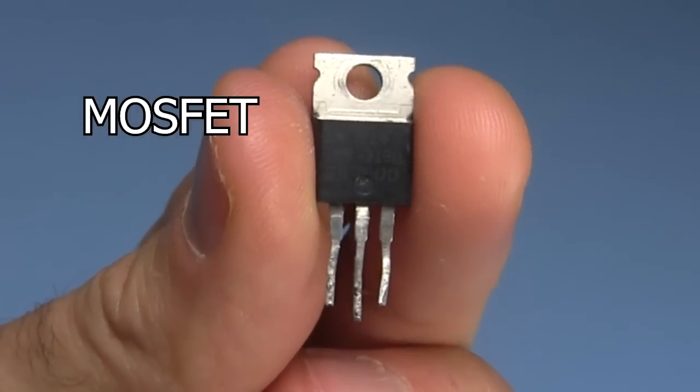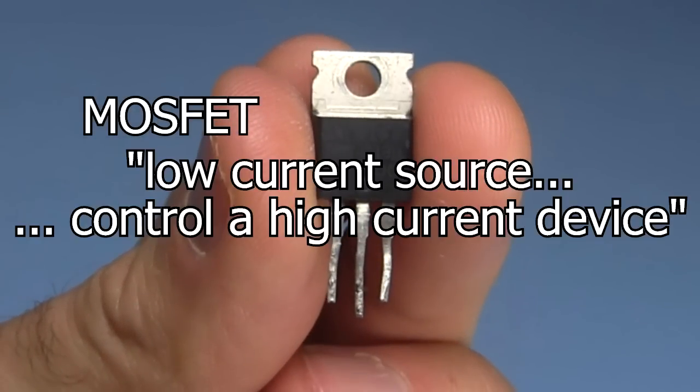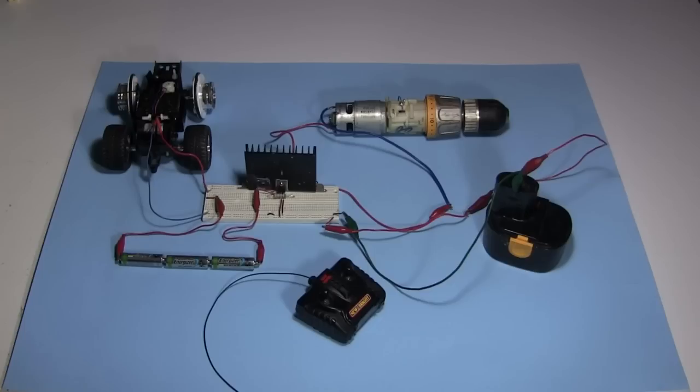MOSFET solves that problem. The MOSFET is useful for having a low current source control a higher current device. This is the test circuit I came up with. Here's the drill battery, the drill motor, the remote control receiver which is in the toy truck, and the MOSFET and other stuff I'll talk about. The MOSFET is the IRF-614 and is one I'd salvaged from somewhere.